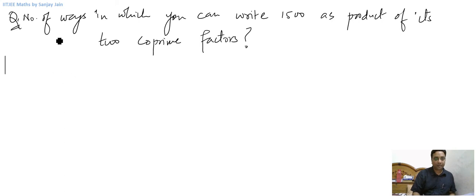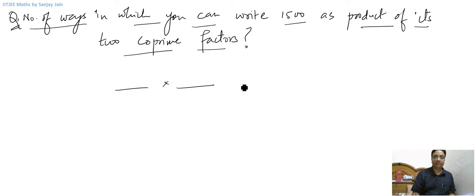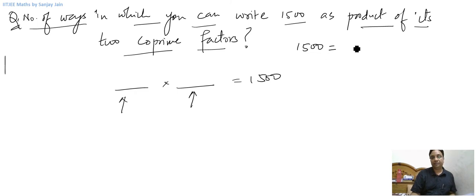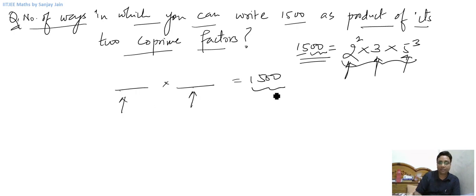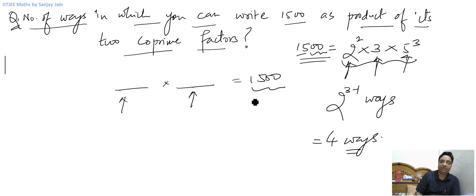Let's take this question: the number of ways in which you can write 1500 as a product of its two co-prime factors. First, let's prime factorize 1500: it gives 2 squared into 3 into 5 cubed. So there are 3 prime factors: 2, 3, and 5. Therefore, the number of ways 1500 can be written as a product of two co-prime factors is 2 raised to power 3 minus 1, which equals 4.